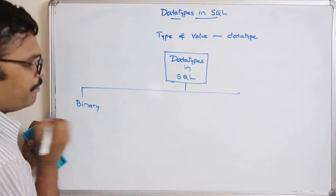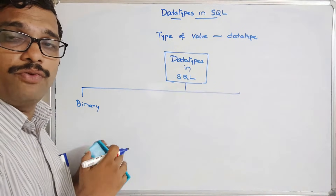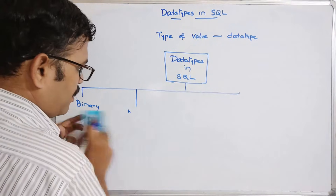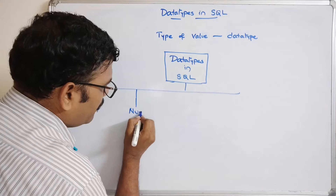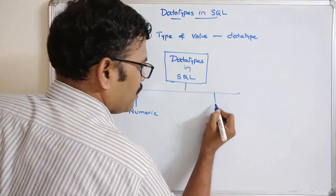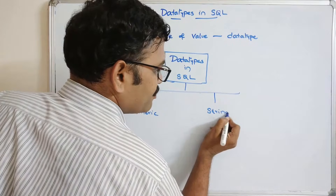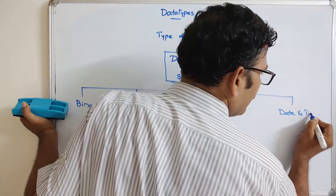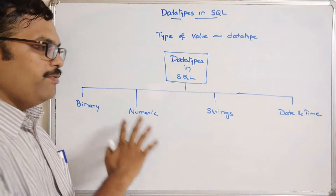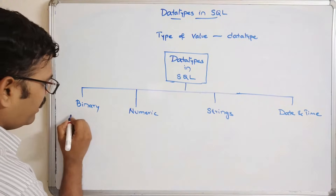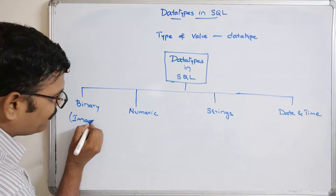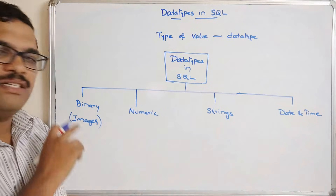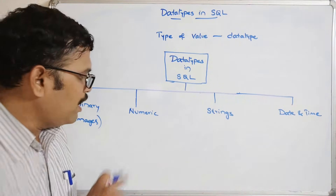The data types in SQL include: binary, numeric, strings, and date and time. Binary is used to store images in a database — similar to storing values, we can also store images, and the data type for that is binary.